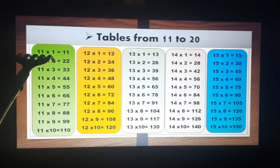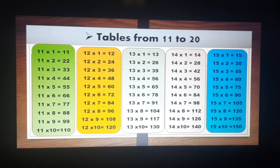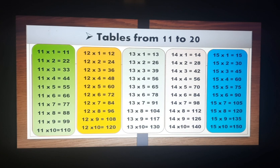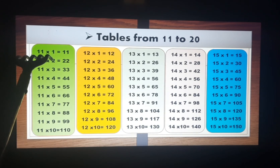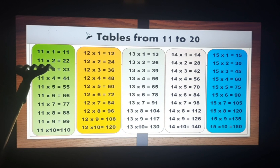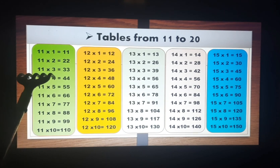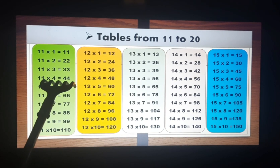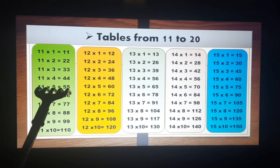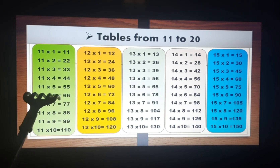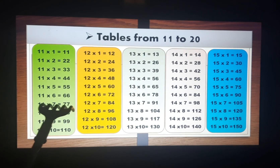Let's start today's video. We will learn and read these tables in the form of a song. You can make your own tune, as we did yesterday. Let's start: 11 ones are 11, 11 twos are 22, 11 threes are 33, 11 fours are 44, 11 fives are 55, 11 sixes are 66, 11 sevens are 77.